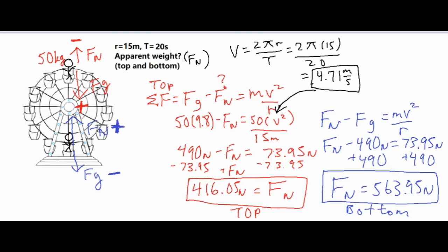For a roller coaster loop, the setup at the top is different: when upside down, the seat faces downward so the normal force points downward toward the center. You would write FN + fg = mv²/r, because both gravity and the seat force point toward the center. I hope this was helpful in solving a ferris wheel problem and finding apparent weights at the top and bottom. Thanks for watching.